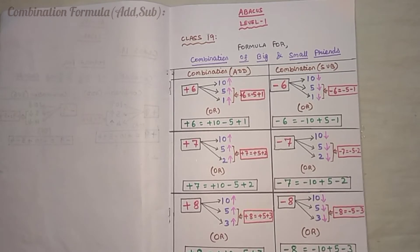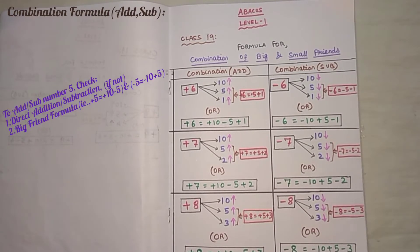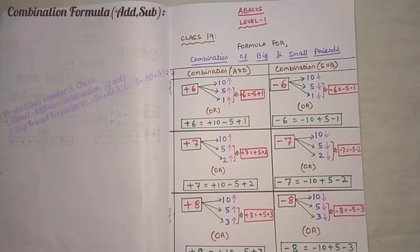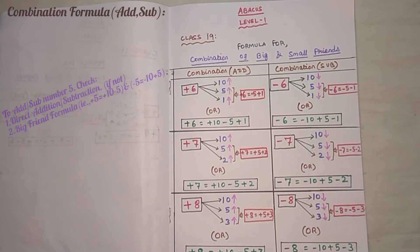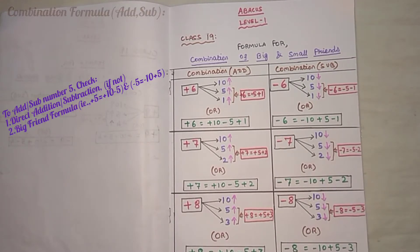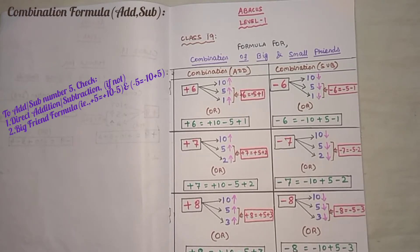Next, coming to number 5: 5 has only the big friend concept. That is, when enough beads are not available to add 5 or subtract 5, then directly we can apply the big friend concept — 5's big friend is 5.